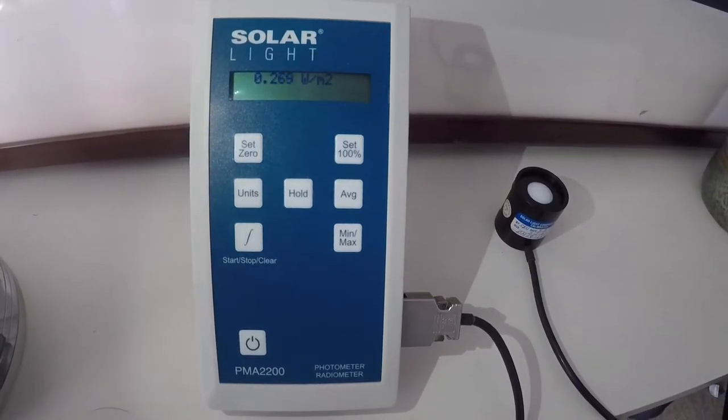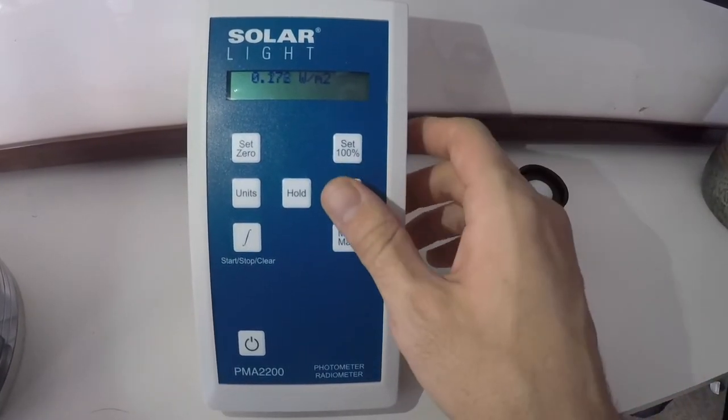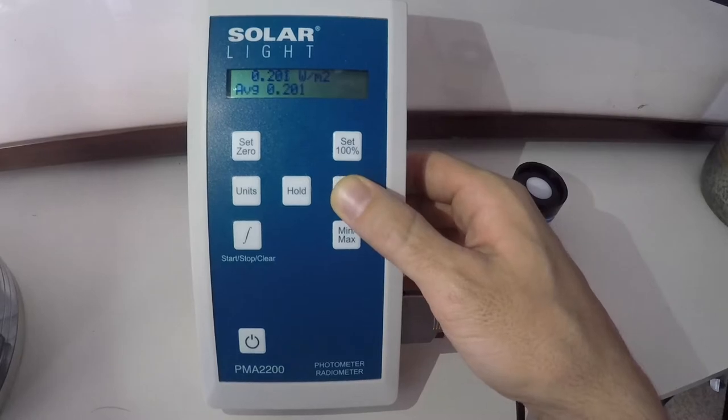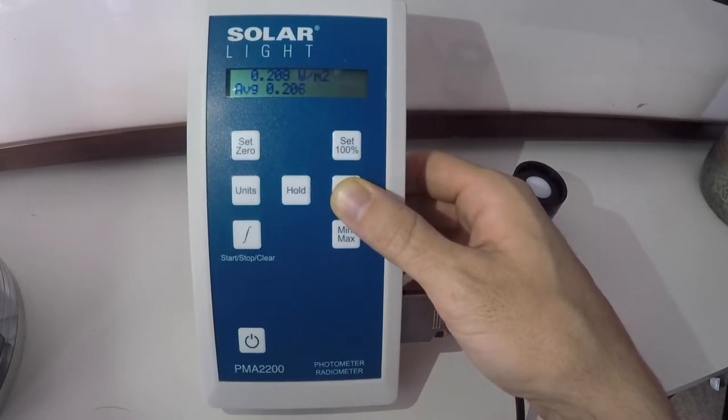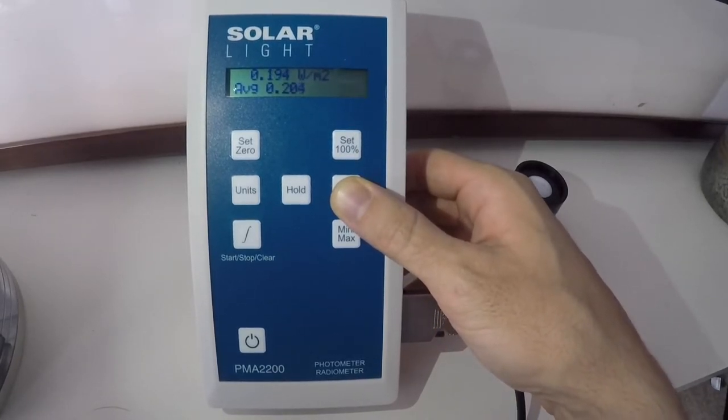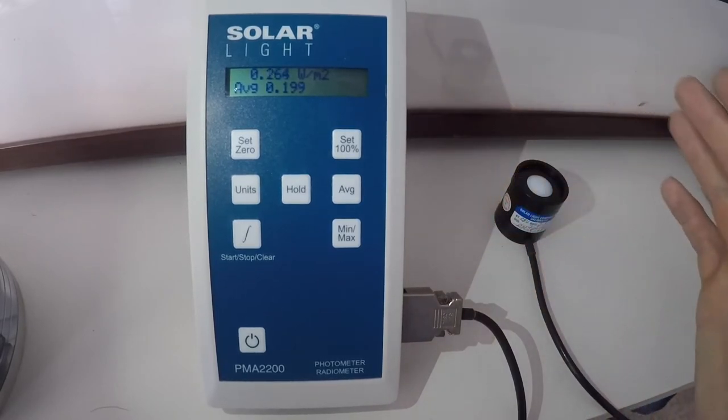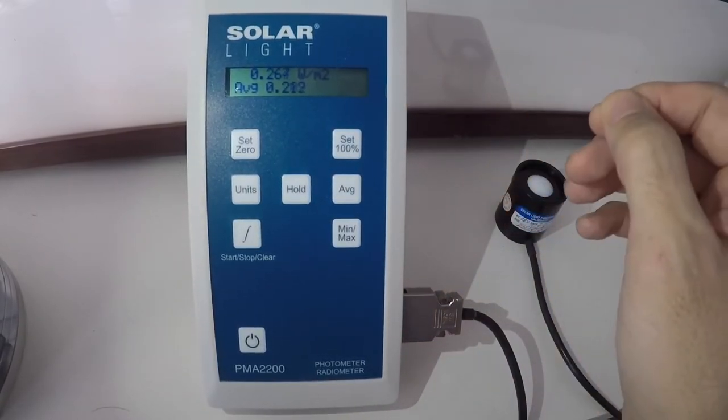Let's look at some additional features that we have. Average is just as it says. We can press the button and we can get the average reading over a time period, which can help a lot of people if they are stumbling over getting numbers that are jumping around too much.